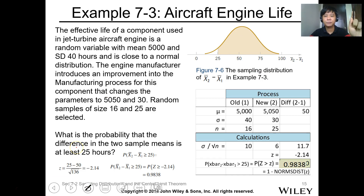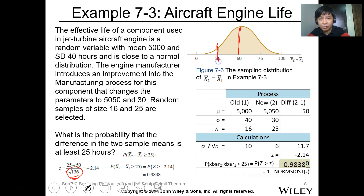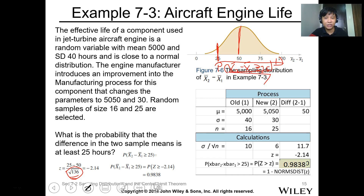The representation shows the mean value is 25, the standard deviation is square root of 136, and we are finding the area under the curve where the probability that x2-bar minus x1-bar is greater than or equal to that value.